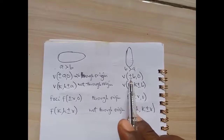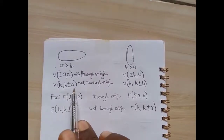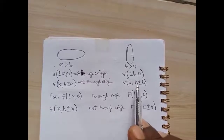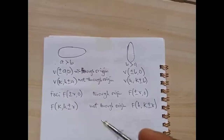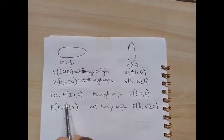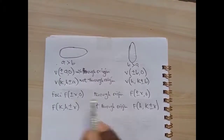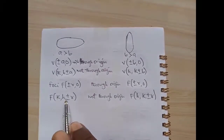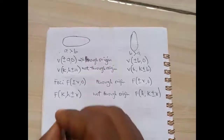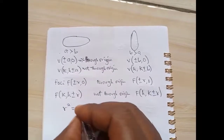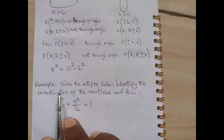For vertices when through the origin and a is greater: (±a, 0). When b is greater: (0, ±b). When not through the origin and a is greater: (h, k ± a) — wait, (k, h ± a); when b is greater: (h, k ± b). For foci through origin: (±r, 0) or (0, ±r). Not through origin: (h, k ± r). R squared equals a squared minus b squared when a is greater, or b squared minus a squared when b is greater.